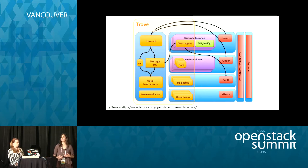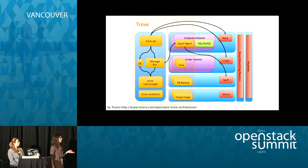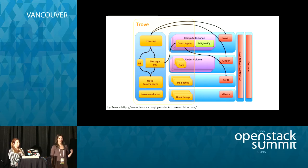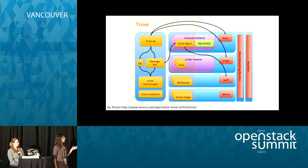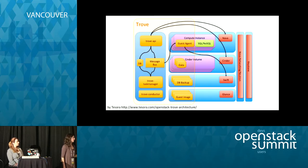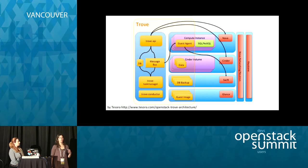Let's take a look at the Trove architecture, because knowing what's going on under the hood will allow you to understand better how to get involved and start contributing code. This diagram is from Tesora — one of the main contributors for the Trove project — and it clearly depicts how the Trove architecture is. We can split the diagram in two parts: on the left side we have all the components of Trove, and on the right side we have the other OpenStack components that Trove relies on. On the right side, we have Keystone and Neutron, which Trove uses for authentication and networking purposes.